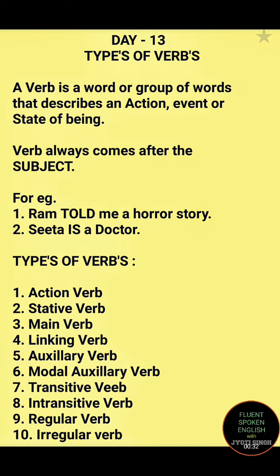For example, 'Ram told me a horror story.' Here an action is going on — Ram is telling a horror story to me. So Ram is the subject, and told is the action verb. 'Sita is a doctor.' Here Sita is the subject and 'is' is the helping verb because it is connecting Sita and doctor, showing a relationship. So 'is' is a helping verb.